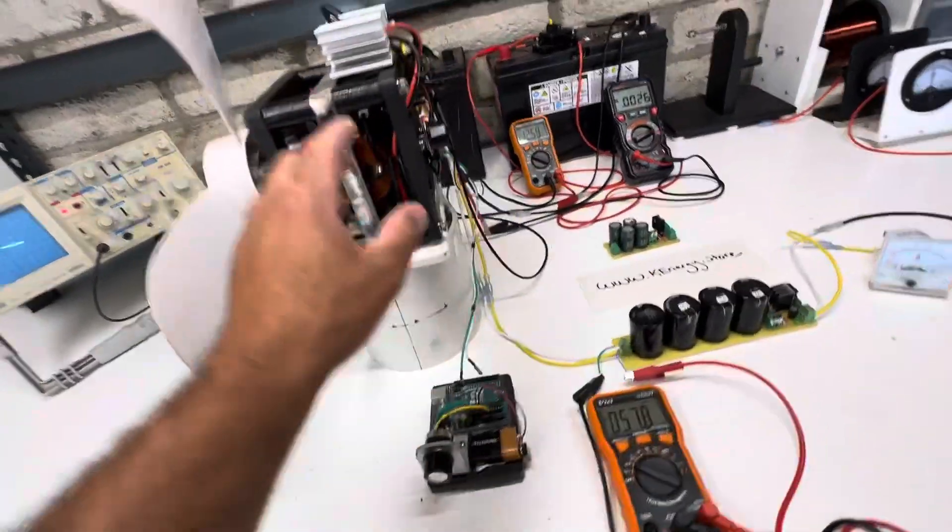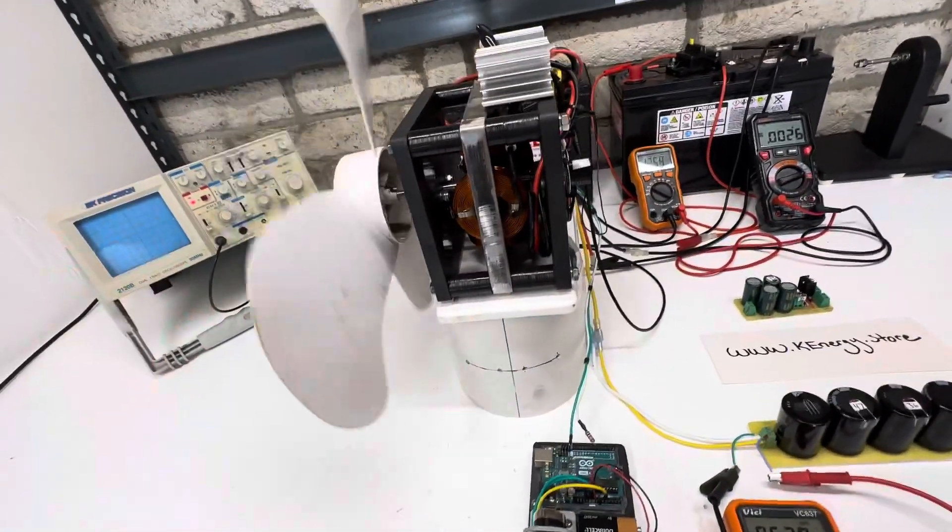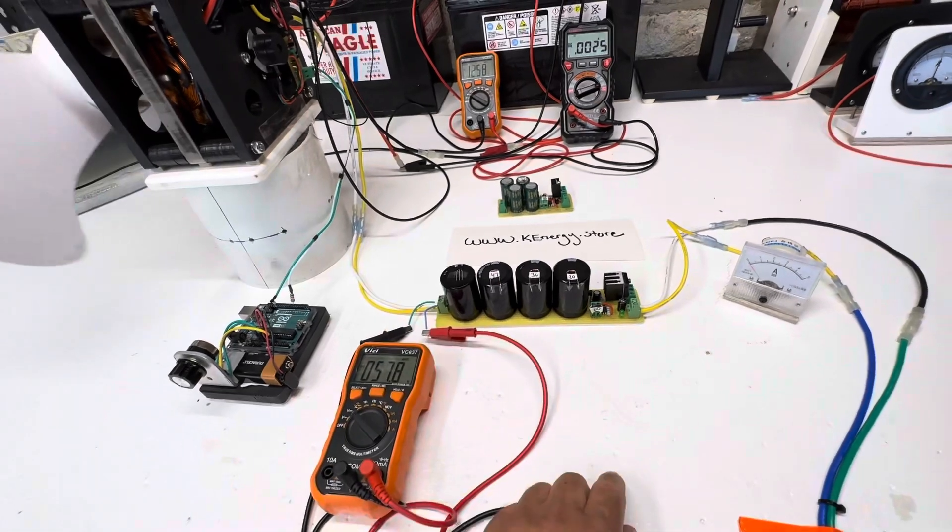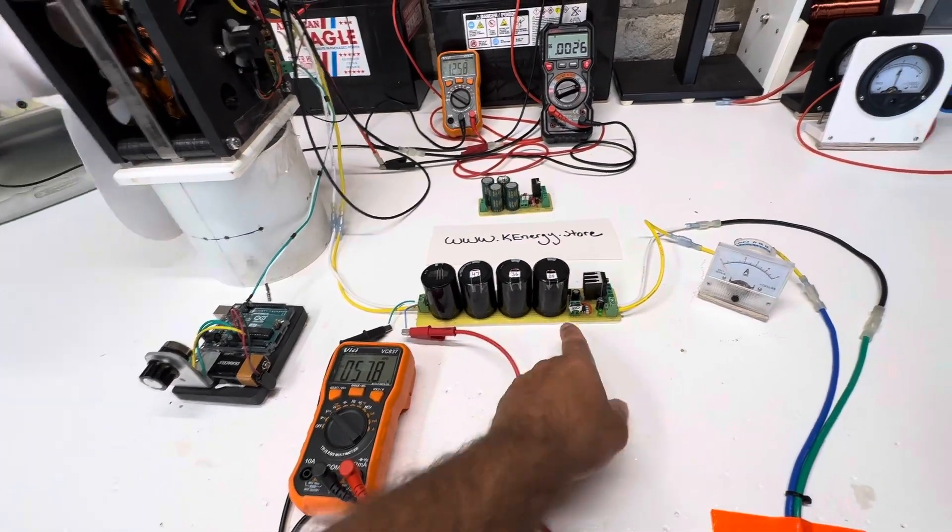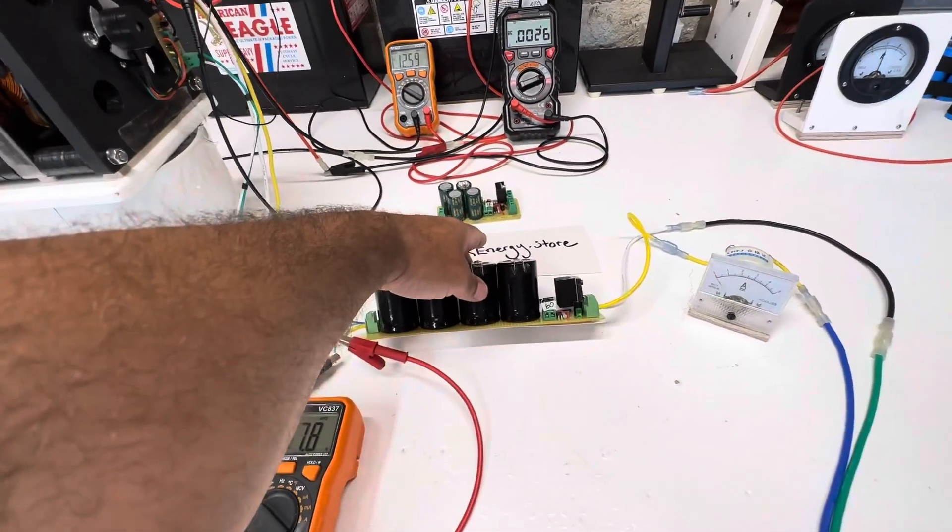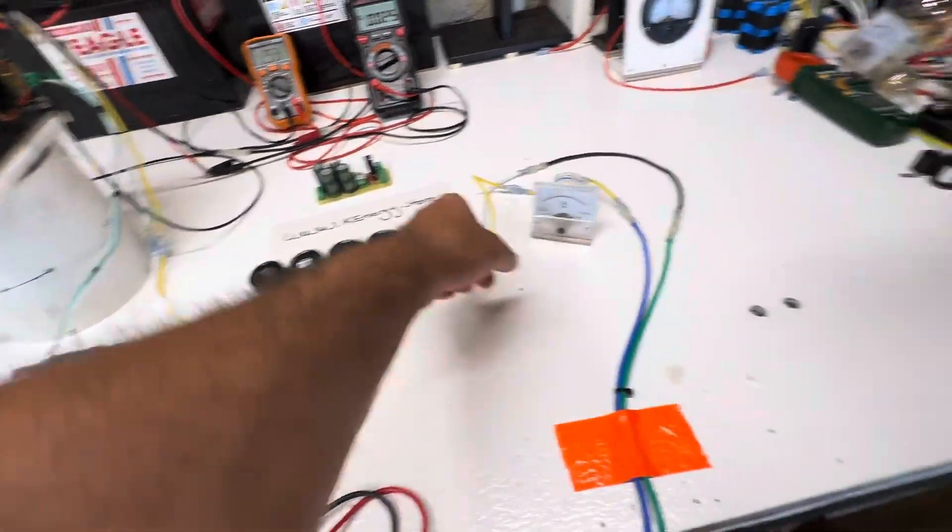The back EMF from the motor, the spikes, come into this cap dump. This is right now set up for 48 volts, so we got a 60 volt zener in there, and then it dumps through the meter.